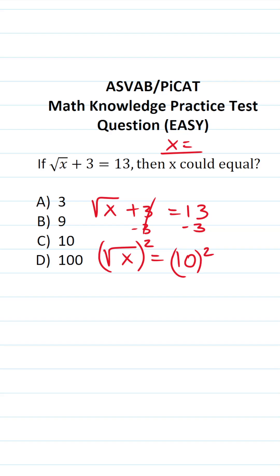This square and square root cancel each other out, leaving you with x over here. 10 squared is the same thing as 10 times 10, which is 100.